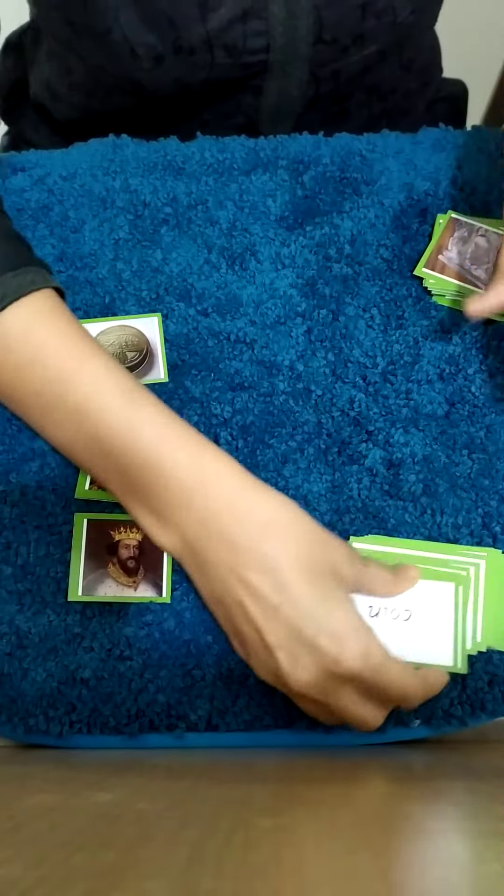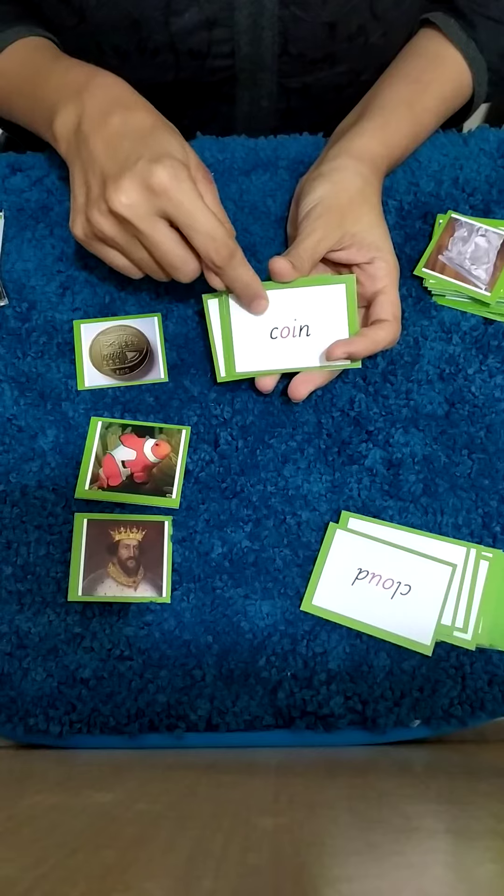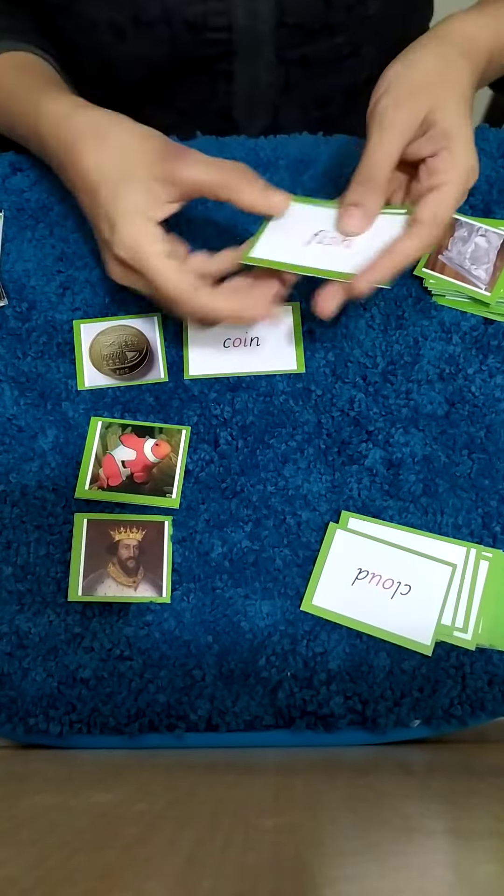You've got this and they've got their cards to read. So for instance, they will read, so the O and E sound together will be OI, so OIN, OIN, coin, and they'll find the coin and match it.